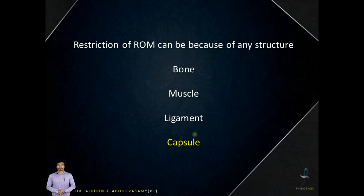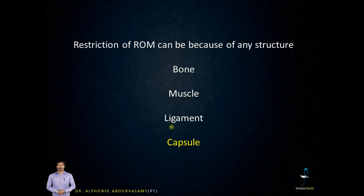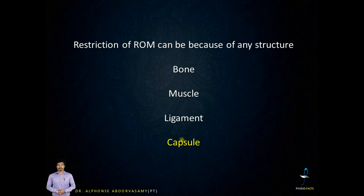Restriction of range of motion can be because of any structure present around the joint. It may be a bony block, a pathology in a bone, or it can be a muscle that has gone into contracture or shortening. It can also be a ligament that adheres to the underlying bone, or finally it can be a capsule that limits the range of motion.